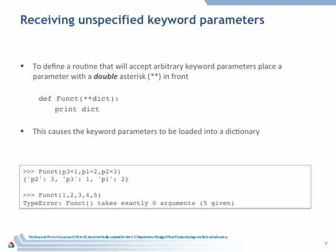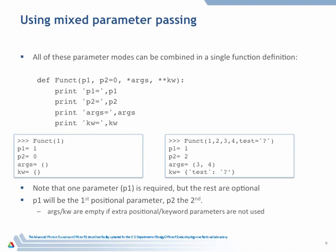So, this code will accept any keywords and no positional parameters. Well, you might want to do both. There's no problem with doing both. You can stick both in. And I've defined this with all of the above. Here is a positional parameter. Here is a defaulted parameter. Anything, if I have more than two positional parameters, they'll show up in args. And if I have any keyword parameters that are not p1 or p2, they will show up in here.